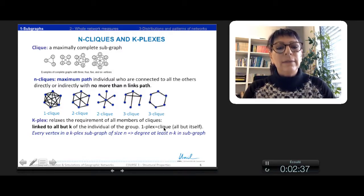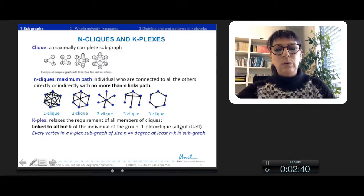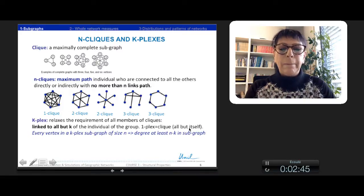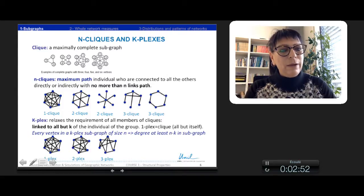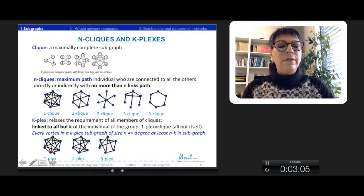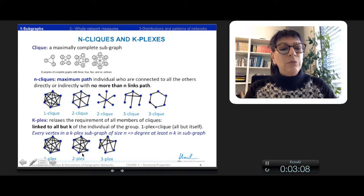A one-plex is a clique, so a node is linked to all the other ones except itself. In the example here, we have a one-plex, so a complete graph. A two-plex, so here we have six vertices. In the case of one-plex, each vertex has five relations. In two-plex, each vertex or node has four relations at least.